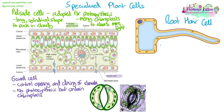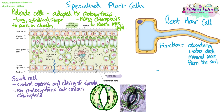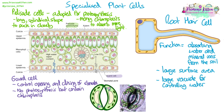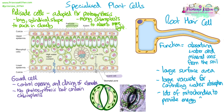The root hair cell's function is to absorb water and mineral ions from the soil. They're specialised with a really long, elongated shape which gives them a large surface area — this speeds up the rate of diffusion and osmosis to maximise absorption of water and mineral ions. They also have a large vacuole, which helps with controlling water absorption, and lots of mitochondria to provide the energy needed for active transport of the mineral ions.